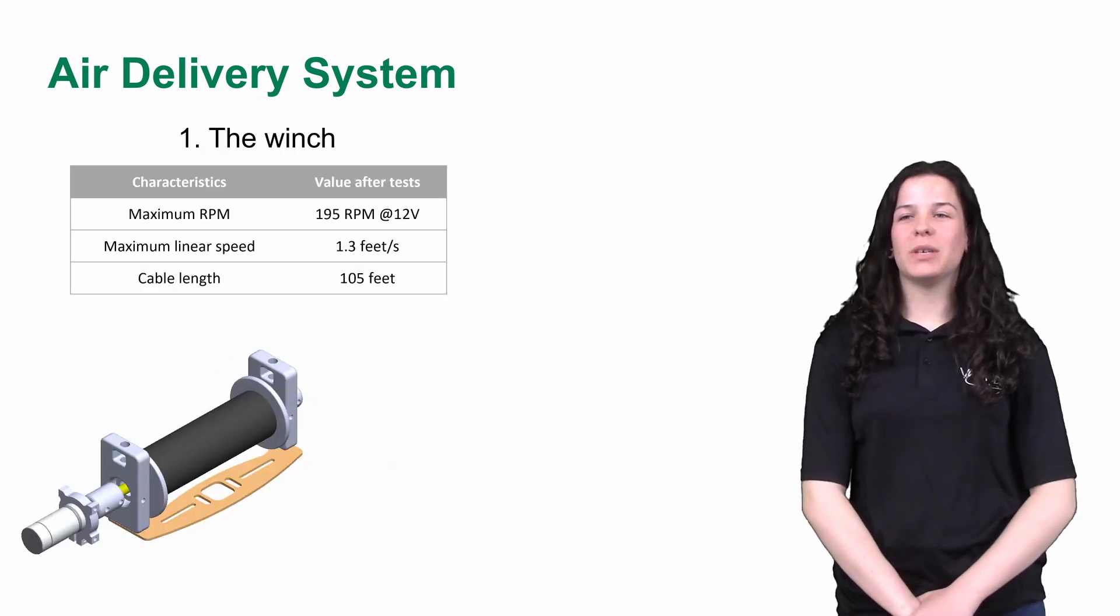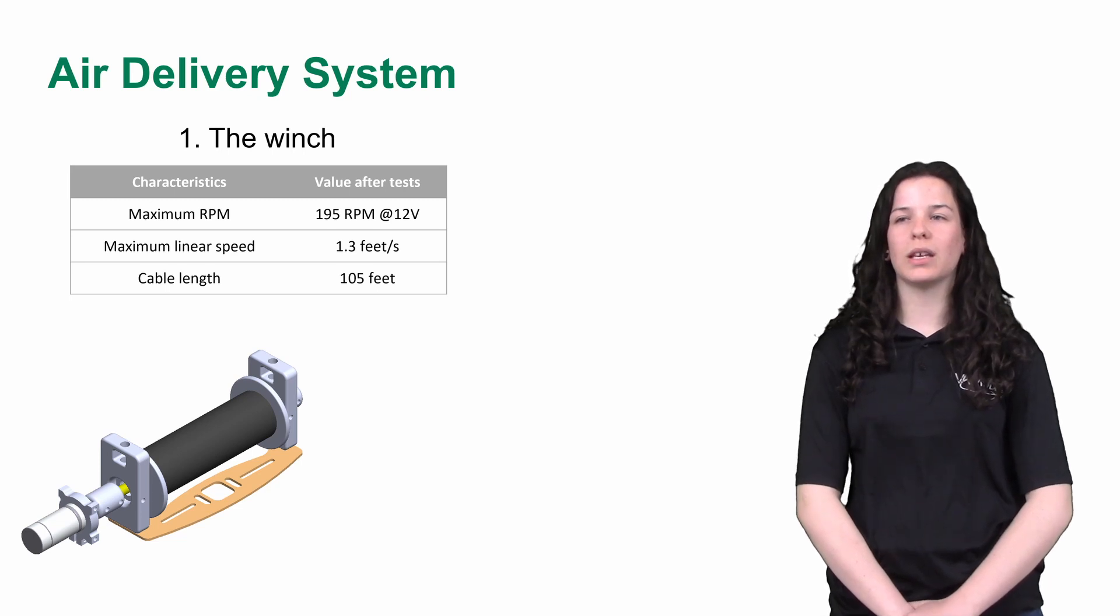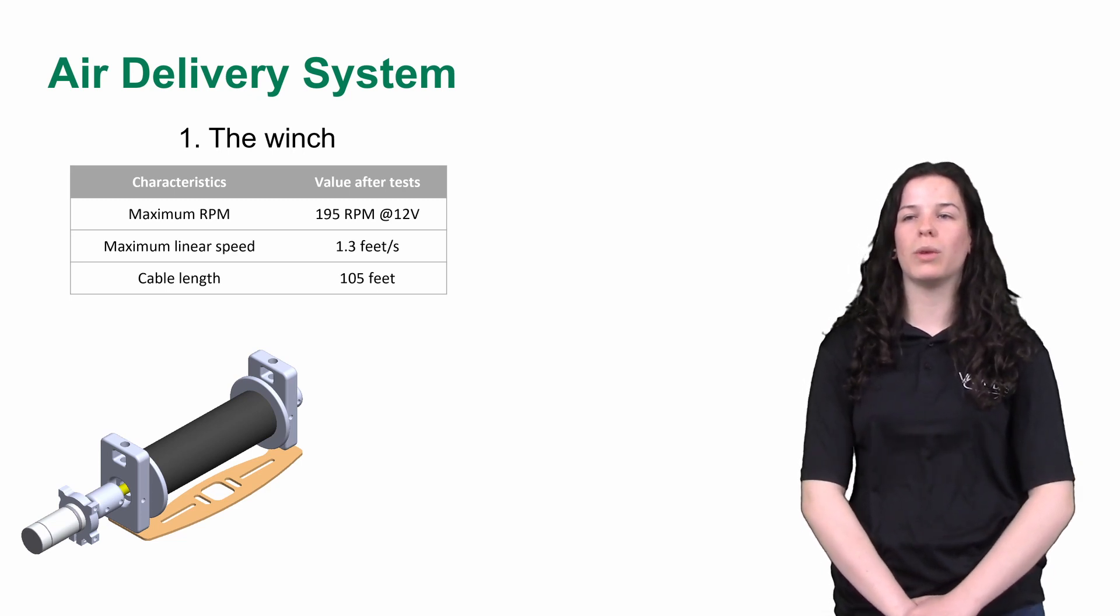The first component of the system is the winch. The winch is directly mounted under the UAV behind the gimbal. This component was optimized to reach the smallest structure possible to fit correctly under the drone while keeping in mind the structure needs to hold the weight of the UGV.